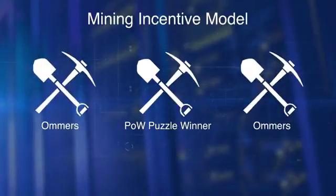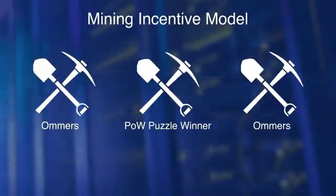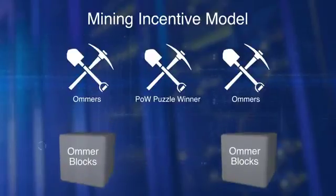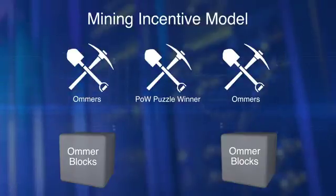There may be other miners who also solve the puzzle besides the winner. These miners who solve the puzzle but didn't win the block are called ommers. The blocks created by them are called ommer blocks. These are added as ommer blocks or side blocks to the main chain. Ommer miners also get a small percentage of the total gas points as a consolation and for network security.